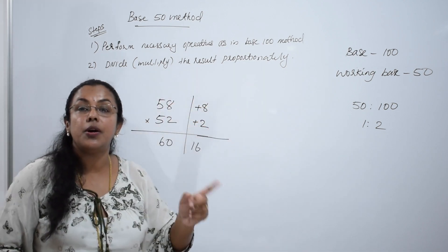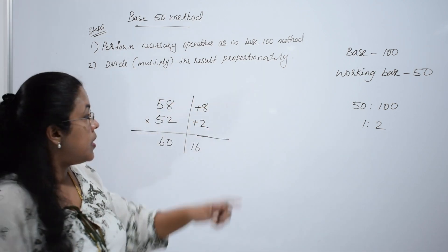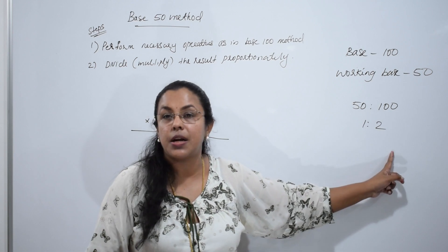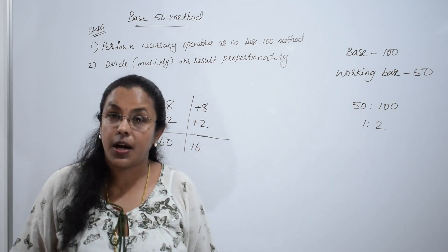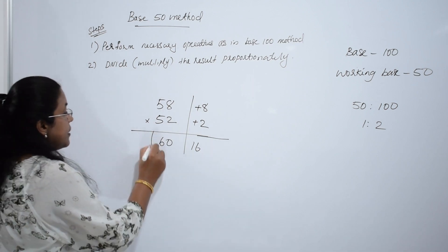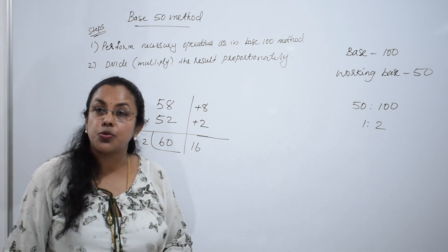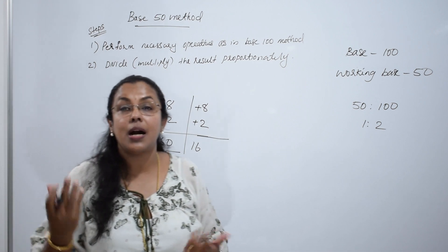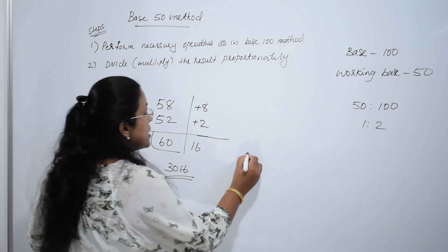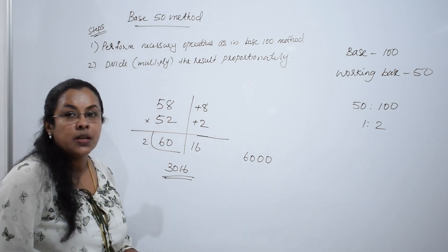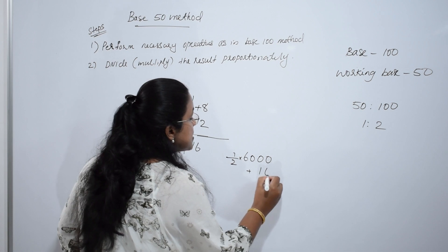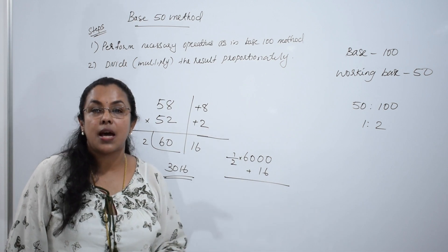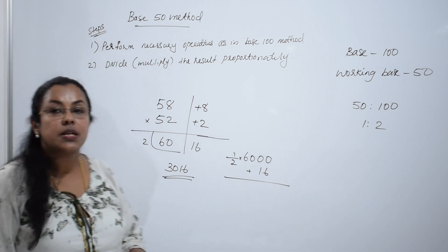The ratio is working base 50 to theoretical base 100, so the ratio is 1 to 2. 50 is half of 100, so we divide the left hand side by 2. The answer is 30, 16. The right side remains unaffected. The reason is that 60 is actually 6000 — half of 6000 plus 16 is the actual procedure. So the final answer is 3016.